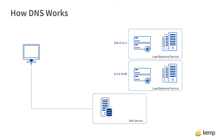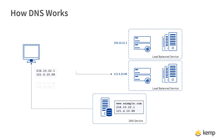If an application is spread across multiple IP addresses, the DNS service can be configured with multiple IP addresses, and when replying will often alter the ordering of IP addresses so that traffic gets spread across all sites. There is no guarantee that traffic will get evenly balanced across sites, but in many scenarios this will prove to be sufficient.